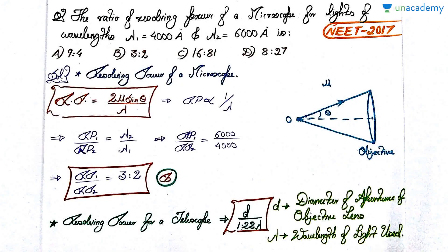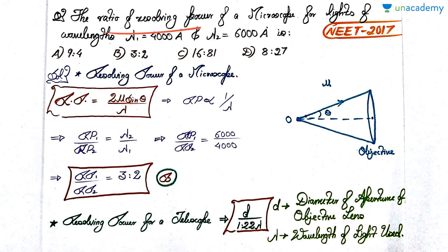The second question, also from NEET 2017, is based on resolving power. The ratio of resolving power of a microscope for lights of wavelength λ1 = 4000 Å and λ2 = 6000 Å is required. The options give various ratios. Pause the video, attempt the question, and then we'll discuss the solution.